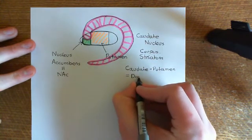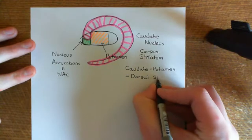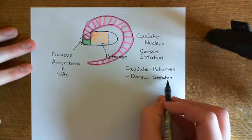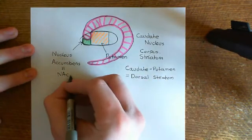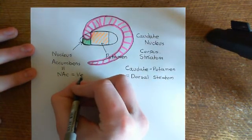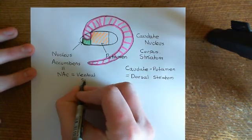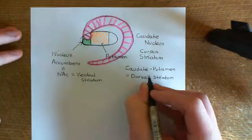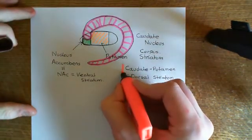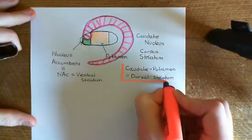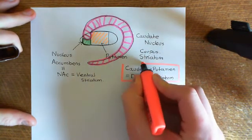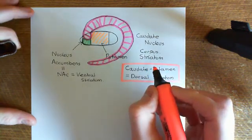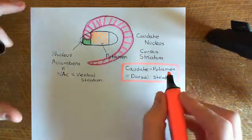There's another term that people use probably more commonly than the caudate-putamen: calling them together the dorsal striatum. So the putamen and the caudate together are known as the dorsal striatum, and the nucleus accumbens is often called the ventral striatum. We will use the terminology 'dorsal striatum' to mean the caudate and the putamen together without the nucleus accumbens. Strictly speaking, 'the striatum' means the caudate nucleus, the putamen, and the nucleus accumbens.